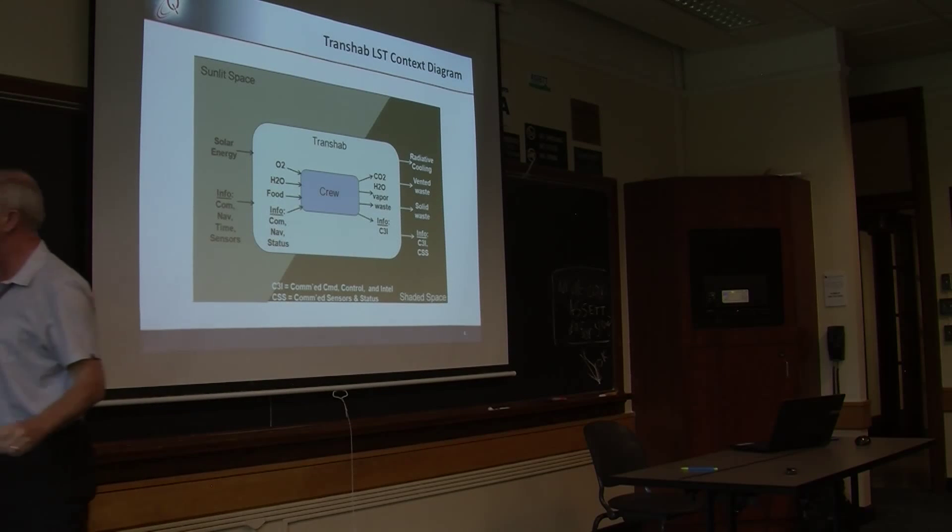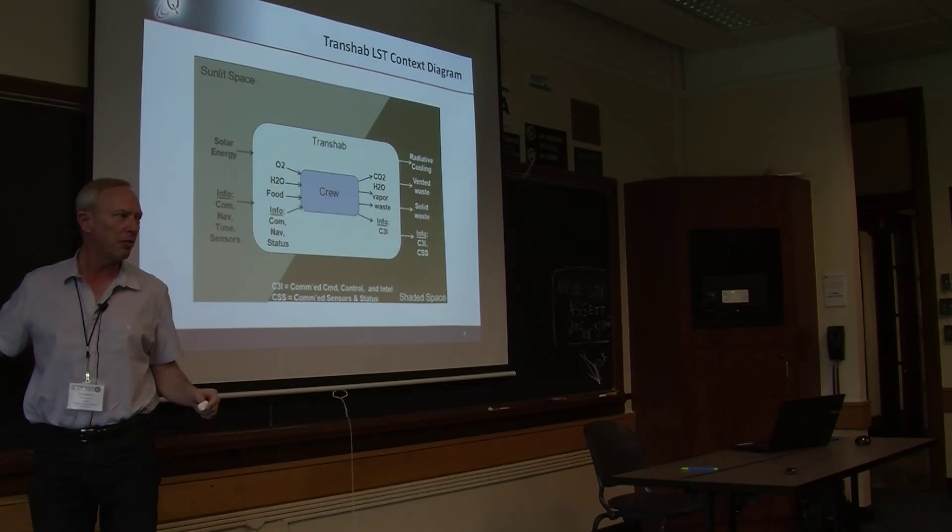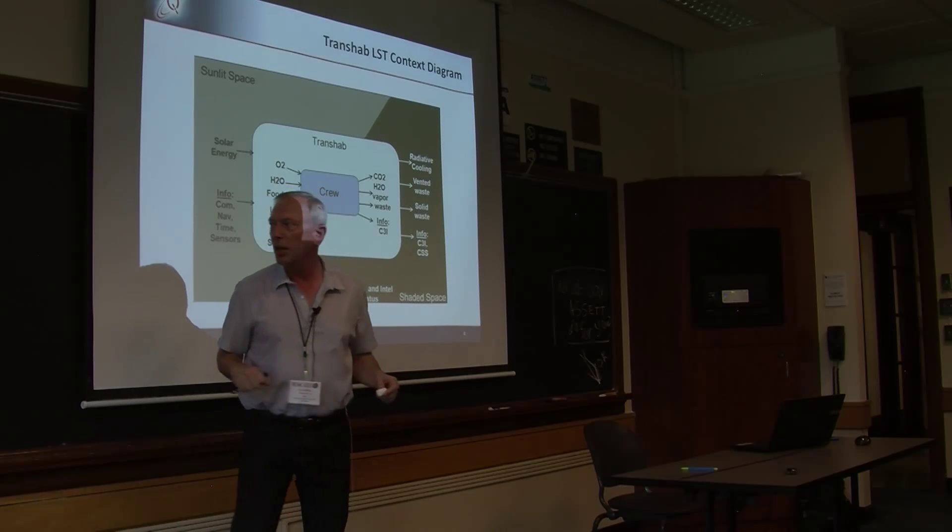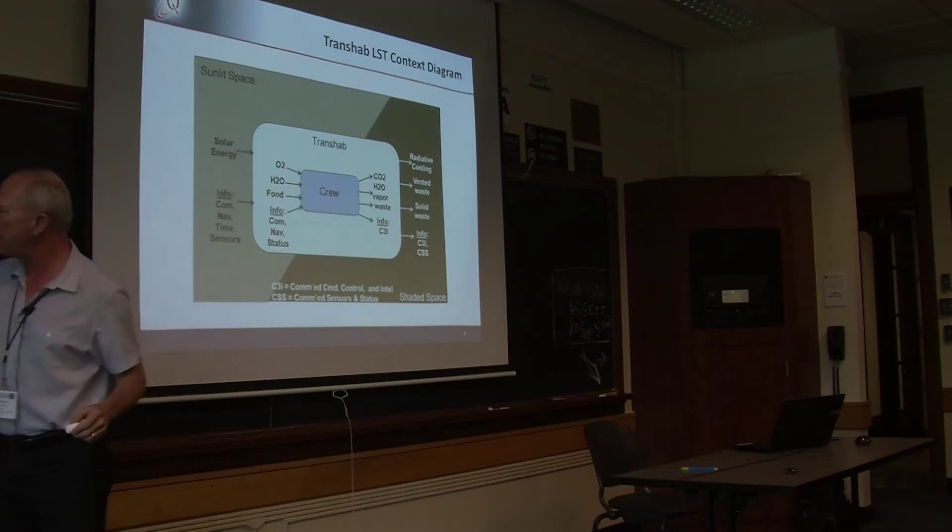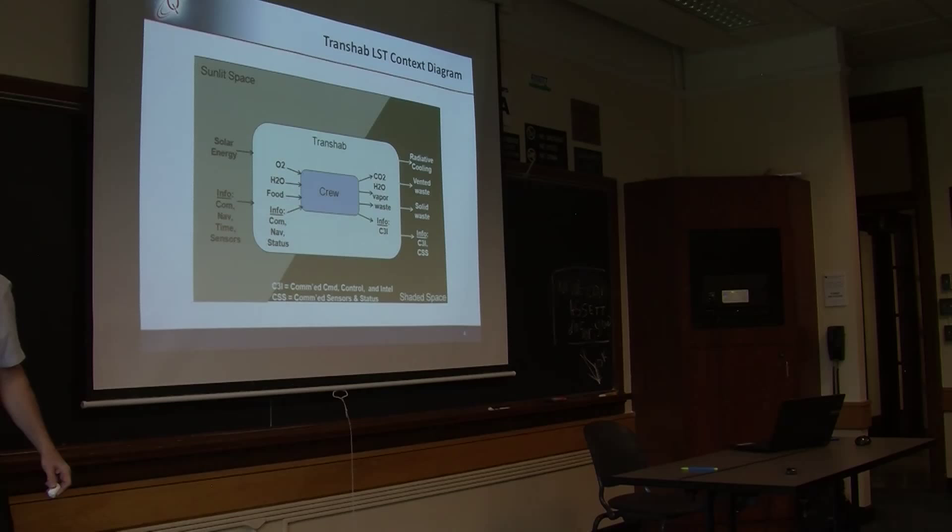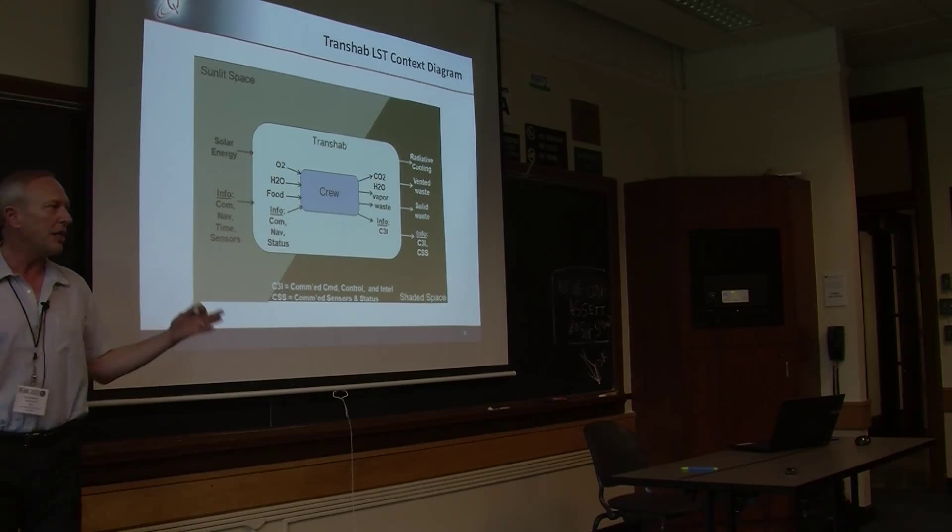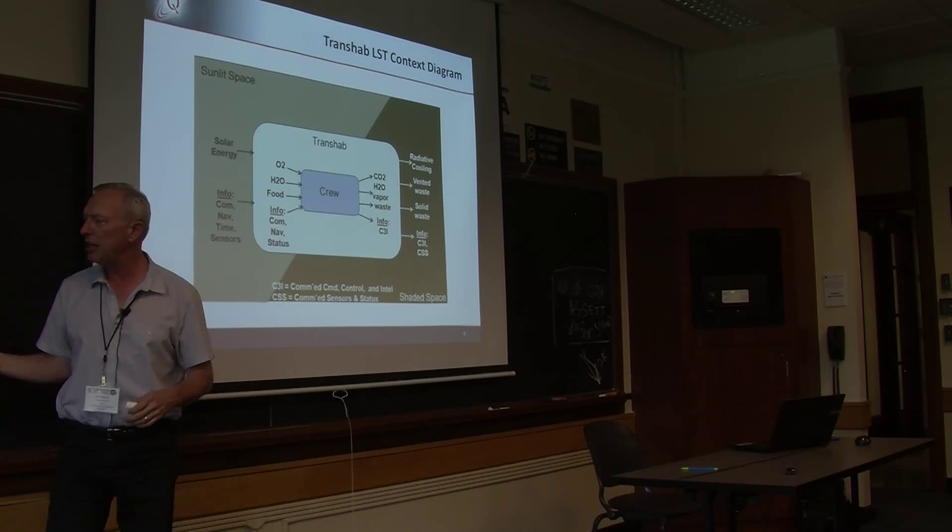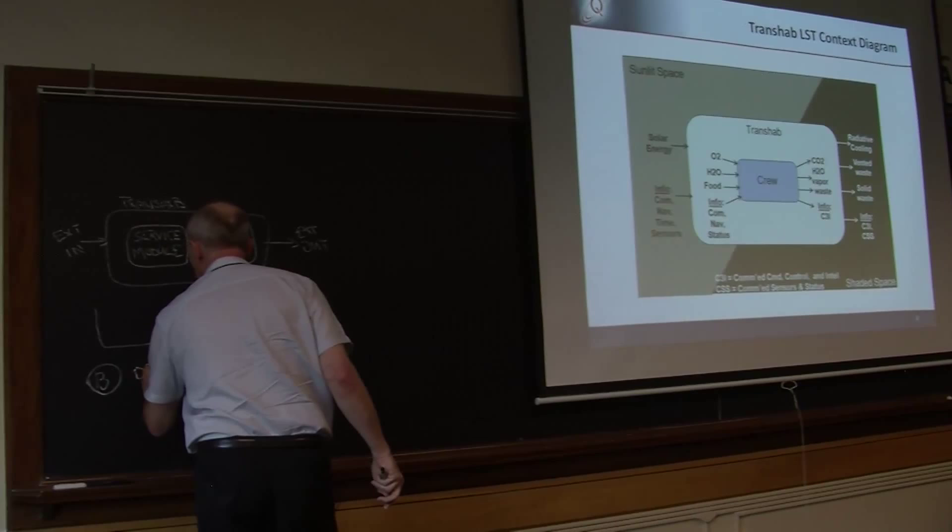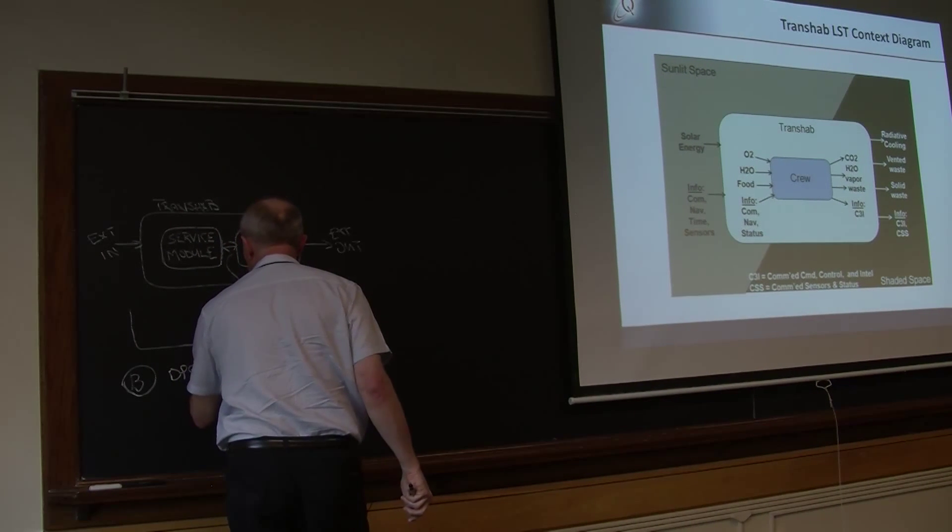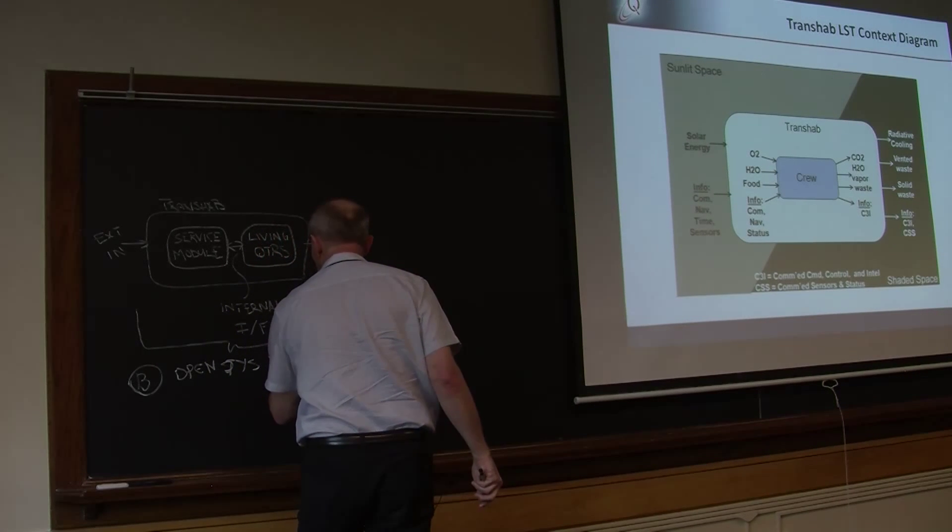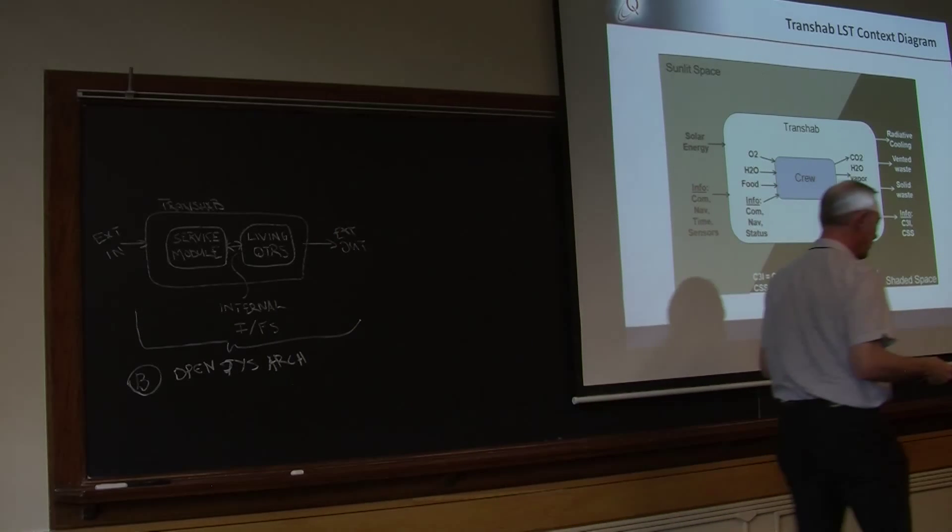And when you're defining these internal interfaces, it's important to show the context of that with respect to what these other subsystems are. And so this brings up a really interesting point. And that is when we're defining open system architectures for space, we want to make sure that we pick the best possible interface standards, not only for our internal interfaces, but also for our external interfaces. So that when it comes time to change components or upgrade technology, you have standard interfaces. So for open system architecture, that's going to be a really important part of this methodology.